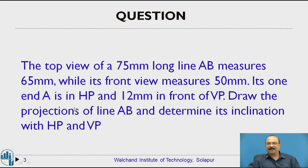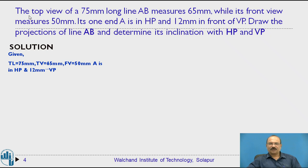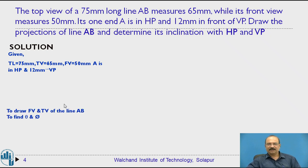In this problem, no angles are given directly — only the dimensions of the lines are given. The given conditions are: the true length of the line is 75mm, the top view length is 65mm, the front view length is 50mm, and point A is in the HP. We need to draw the front view and top view of line AB and find angle theta (inclination with HP) and phi (inclination with VP).